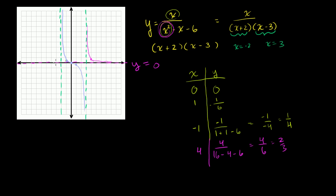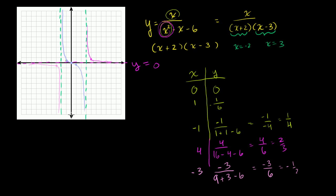When x is equal to negative 3, we have negative 3 over negative 3 squared, which is 9, minus negative 3 — so plus 3 — minus 6. That's negative 3 over 6, equal to negative 1 half. So the point (negative 3, negative 1/2) is plotted. We're going to approach the horizontal asymptote as we get very negative, and go straight down toward the vertical asymptote at x equals negative 2.